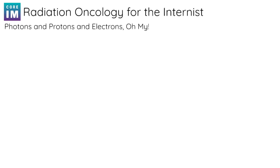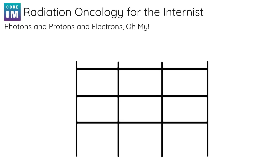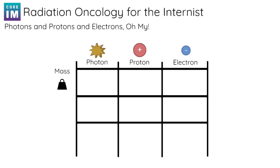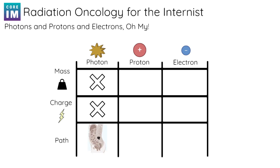The answer lies in the other two particles — protons and electrons. Let's make a chart to help us compare photon, proton, and electron radiation. We'll compare their mass and their charge, and examine how those two properties affect the path of each particle through the body. As we just talked about, photons have no mass and no charge, so they pass straight through the body without resistance. We'll call this kind of path through and through.